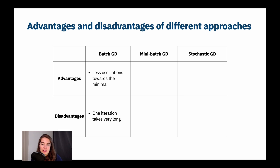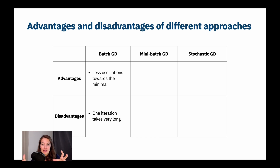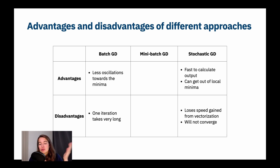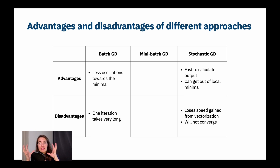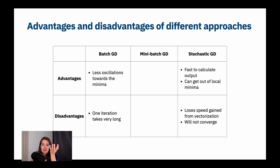With batch gradient descent, you don't oscillate much going to the minimum — you know where it is and you go there. But the problem is that one iteration takes a very long time, because you're giving the network all your data and it calculates everything and updates all parameters using all examples. With stochastic gradient descent on the other extreme, you can calculate the output very fast since you're only giving one example — it's lightning fast — but it oscillates a lot.